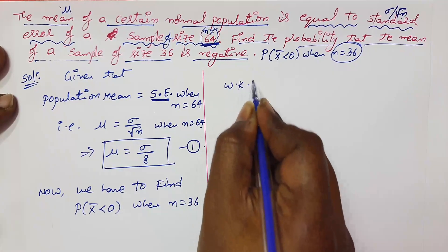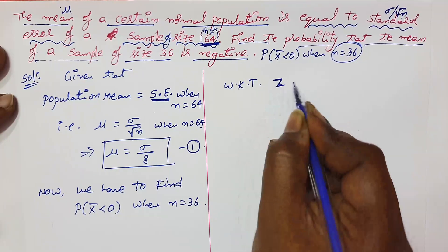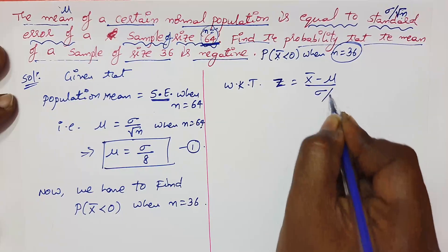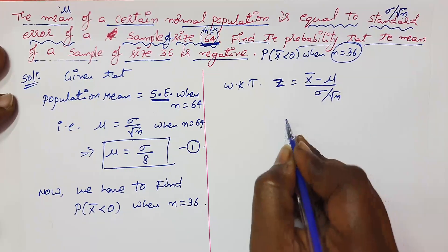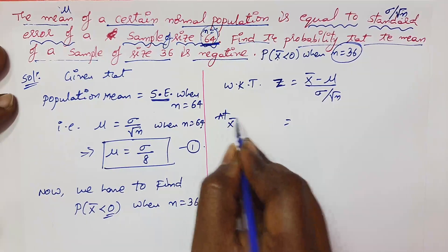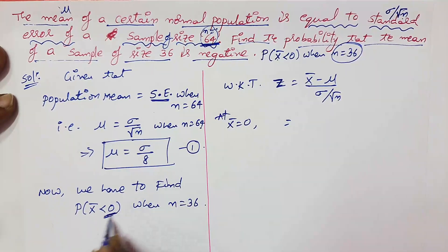So we know that what is the standard normal variate z? x bar minus mu by sigma by root n. So x bar is 0. At x bar equals 0, we have only one endpoint. At that endpoint, we have to find out the z value.